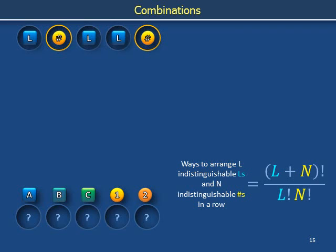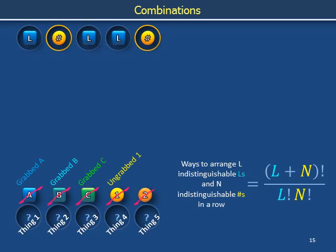The word "combinations" is the keyword you use to search for additional reading on this topic. It turns out that the quotient (L+N) factorial divided by L factorial N factorial is also the number of combinations of L things that can be grabbed from L+N distinguishable objects. To see why, rename each slot as a "thing," and wherever you previously said "square" or "letter," say "grabbed," and wherever you said "circle" or "number," say "ungrabbed."